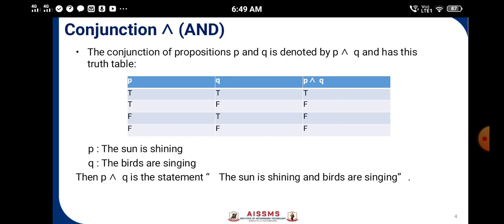Conjunction: The conjunction of propositions p and q is denoted by p ∧ q and has the truth table as p has T, T, F, F, and q has T, F, T, F. When we do the and operation, we get the truth value as T, F, F, F. Consider the example: statement p, 'the sun is shining'; statement q, 'the birds are singing.' Then p ∧ q is the statement: 'the sun is shining and birds are singing.'